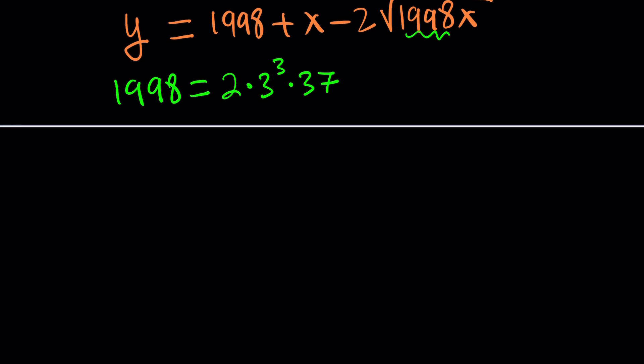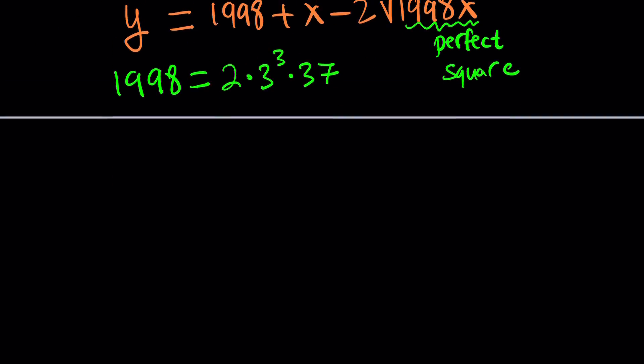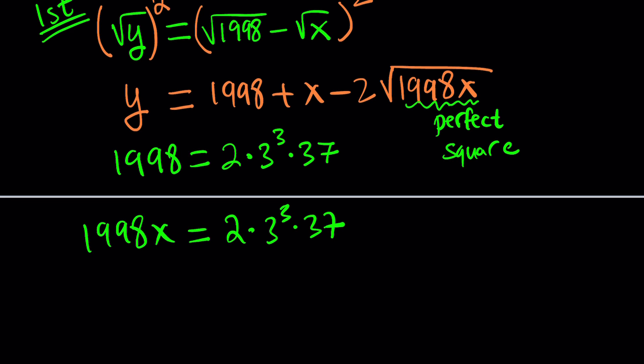Here's what we need: this needs to be a perfect square. Did I mention we're solving a Diophantine equation? We're looking for integer solutions — otherwise there are infinitely many real solutions. So the expression inside the radical needs to be a perfect square to get integer solutions. If 1998x is a perfect square, let's write it as 2 times 3³ times 37 times x.